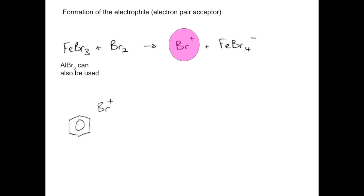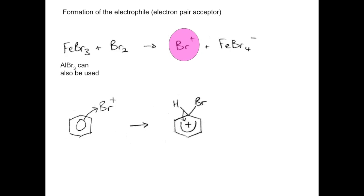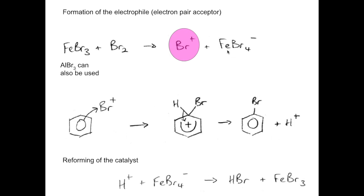So if we bring the electrophile and the benzene together — same thing as before. A pair of electrons from the pi electron cloud is attracted to the electrophile, giving us the intermediate. Then we lose a pair of electrons from the C-H bond; it goes back into the cloud and reforms the electron cloud, generating an H+ ion as well. The last step is to reform the catalyst: the H+ ion combines with the FeBr4- ion, forming HBr — which is the other product of the reaction — and FeBr3 is reformed.